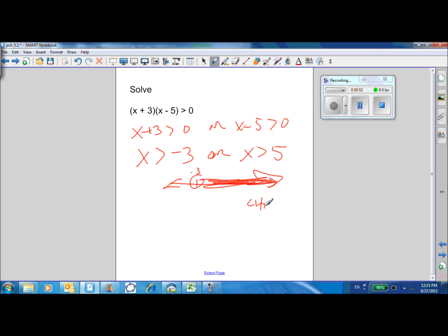But if I check some other points here, like 0, 0 certainly in there, check X equals 0, 0 plus 3 times 0 minus 5 is negative 15. This technique does not work because the zero product property is about equations.